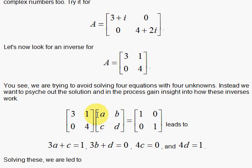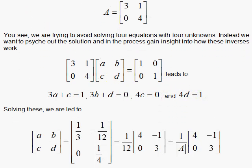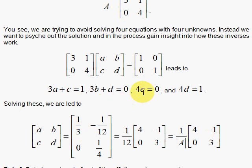So 3 times A plus 1C has to be 1. 3B plus 1D has to be equal to 0. And 0A plus 4C has to be 0. So 4C has to be 0. And 0B plus 4D has to be 1. So 4D has to be 1. So if we look at these conditions, let's see what we have. Well, the C is equal to 0.